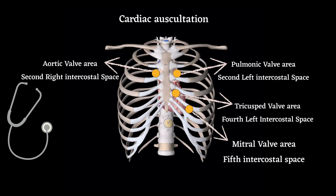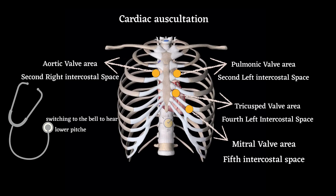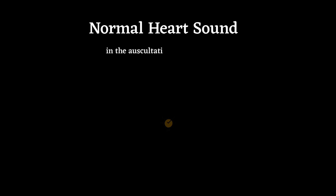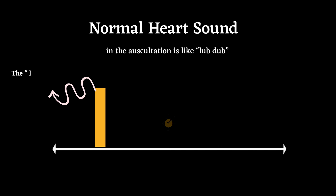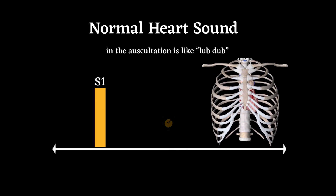By using the stethoscope's diaphragm, switching to the bell to hear lower pitch sounds. The two major sounds heard in the normal heart on auscultation are like lub-dub. The lub is the first heart sound, commonly termed S1, and is caused by the closure of the mitral and tricuspid valves at the start of systole.